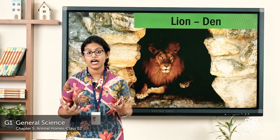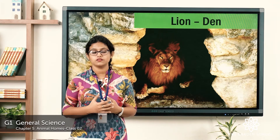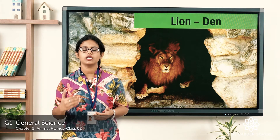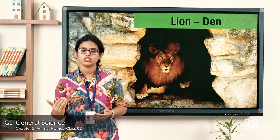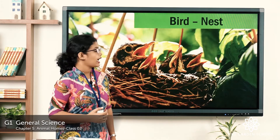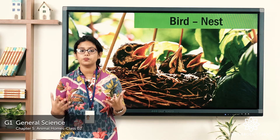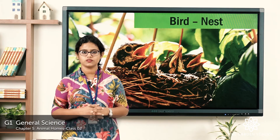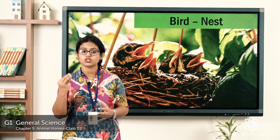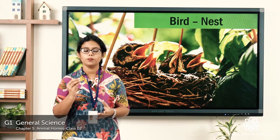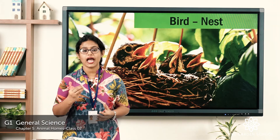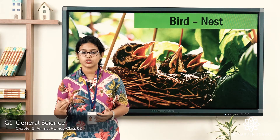The next one is the lion. Where does the lion live? They live in the den. Even the lion lives under the shade of trees. So, a lion lives in the den. And what about birds? Where do birds live? They live in the nest. Have you seen birds building their nests on the trees? Birds build their nests on trees. These are some of the animals and their shelters.